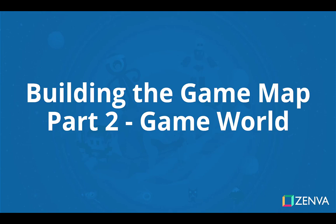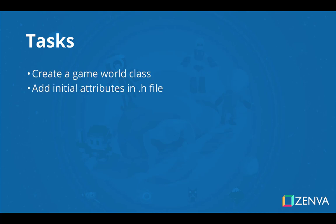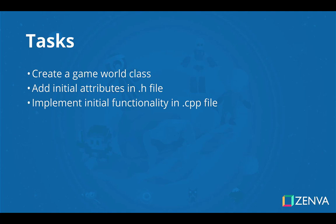Welcome to part 2 of our building the game map sub-series. Here we're going to start focusing on the game world itself. This is going to be a big class that contains most of the game's logic and functionality. We'll begin with the initial setup implementation — first creating the game world class, adding the necessary initial attributes in a .h file and some initial functionality in the .cpp file. We'll be adding to this class as we go, but let's get the initial setup done in this section. Let's head to the code and begin.